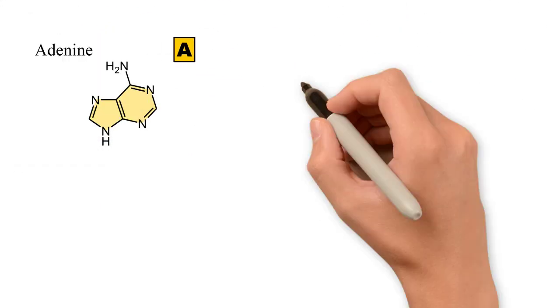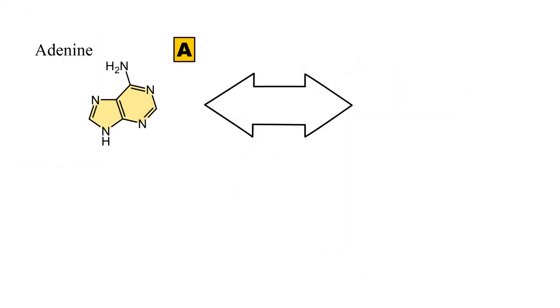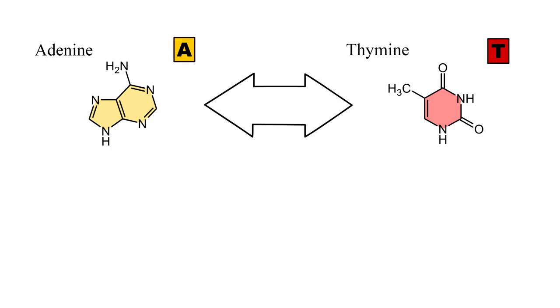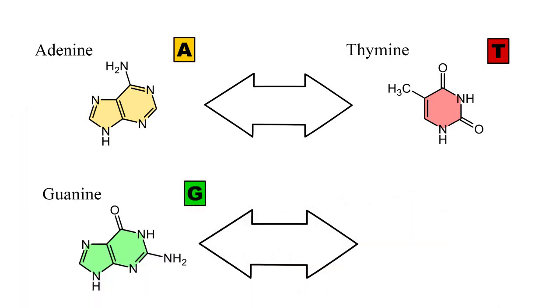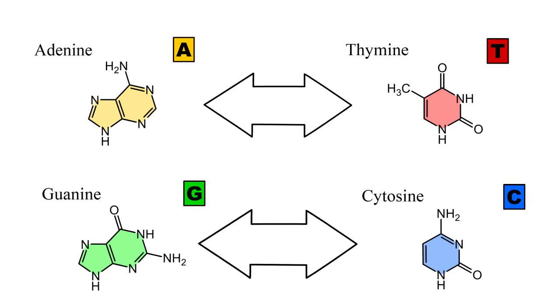In the DNA, the purines form hydrogen bonds with their complementary pyrimidines. Adenine connects to thymine, and guanine connects to cytosine.